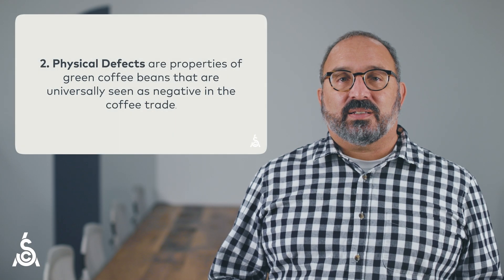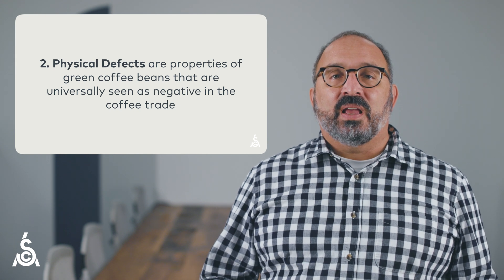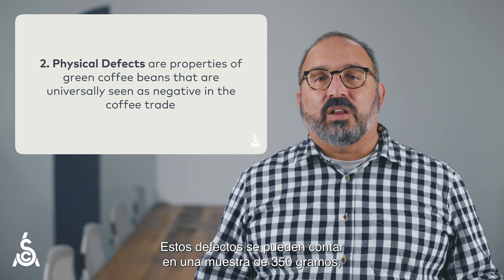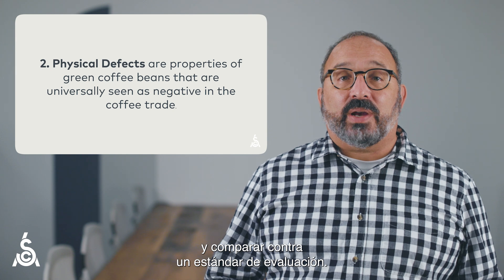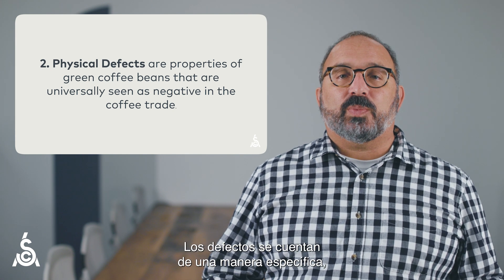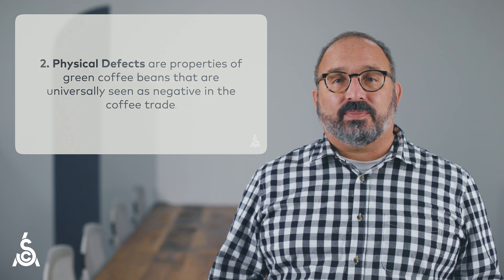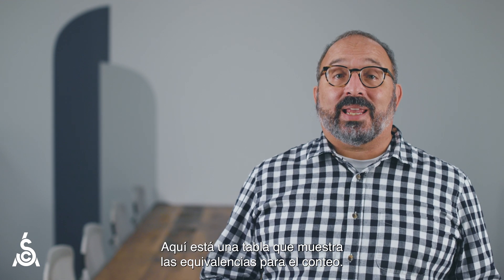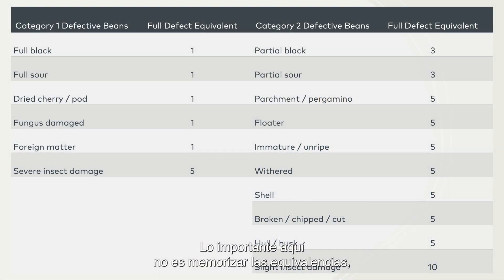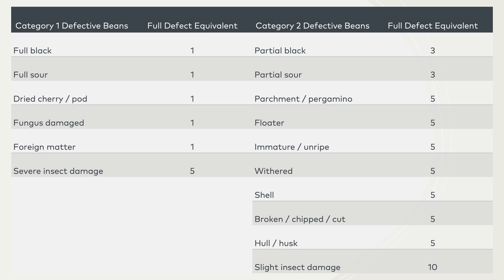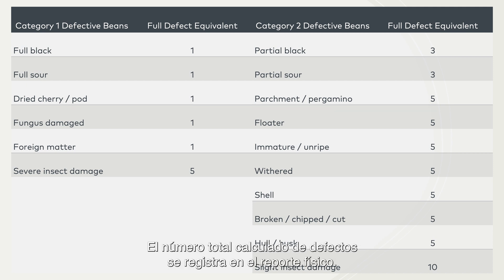Second, physical defects. These are properties of green coffee that are universally seen as negative in the coffee trade. These defects can be counted in a 350-gram sample and compared against a grading standard. The defects are counted in a specific way and detailed in the SCA Protocol and SCA Green Coffee Defect Handbook. Here is a table showing the counting scheme. The important thing is not to memorize the equivalents, but to recognize that all physical defects are not counted equally — they are counted differently according to their severity and importance. The calculated total number of defects is reported in the physical report.